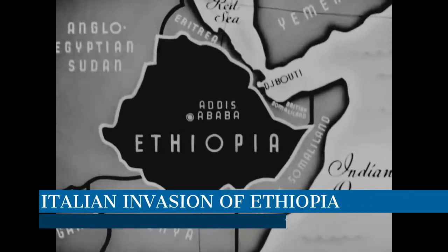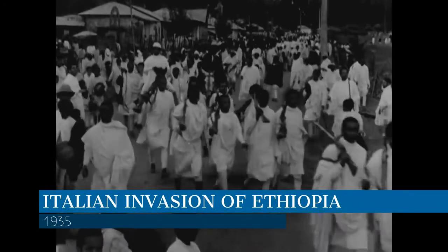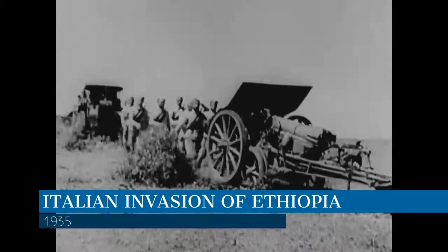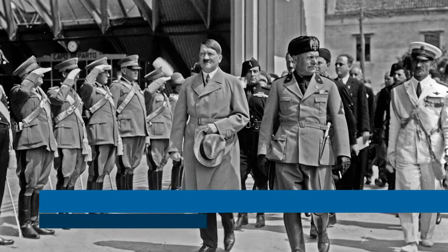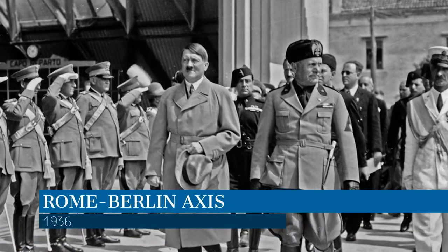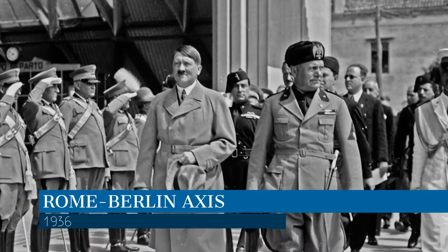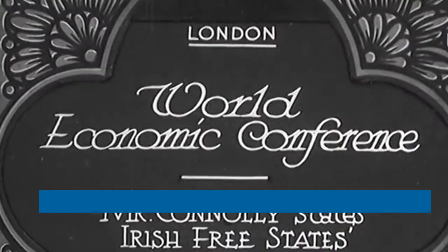In 1935, Mussolini invaded Ethiopia in order to begin building a new Roman empire. A year later, Italy allied with Nazi Germany to create the Rome-Berlin Axis, or more simply, the Axis powers. For Americans, the Great Depression only deepened isolationist sentiment, and most Americans became more focused on solving the economic crisis than worrying about the rise of dictators overseas.